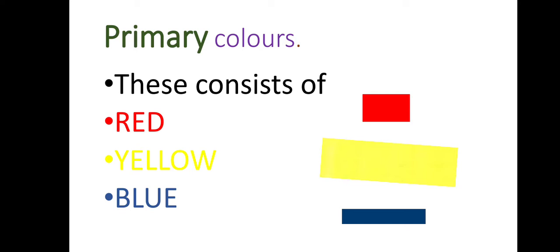Now, these are primary colors. Primary colors consist of red, yellow, and blue. As you can see on your screen: red, yellow, and blue.